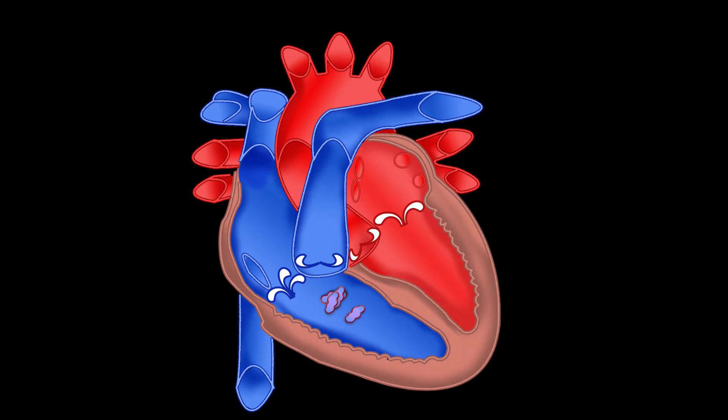When the ventricle is full, the tricuspid valve shuts. This prevents blood from flowing backwards into the atria while the ventricle contracts.